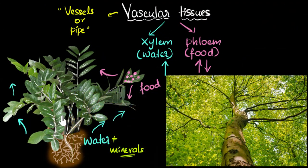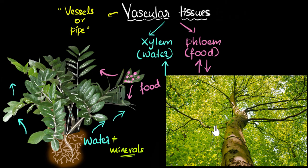Now that plants developed vascular tissues, nothing could stop them from growing tall — into trees hundreds of meters high — giving us forests and jungles. But you might wonder: how does the transport system even work? In tall trees, how does water get from the ground all the way to the top? Is there some kind of a pump? That's where things get even more interesting — and we'll look at those mechanisms in future videos.